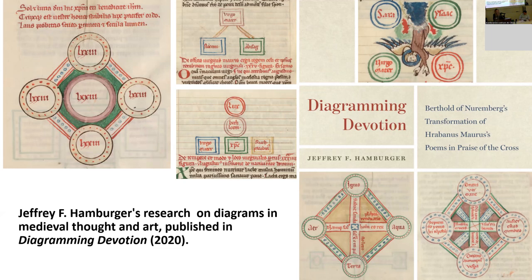However, long before the network boom — or network turn — art history had already been using concepts to capture the relationships between entities, be they artists, artworks, art schools, styles, or forms. From this point of view, networks may appear to be only the logical successor to earlier concepts that art history had used to describe relations.